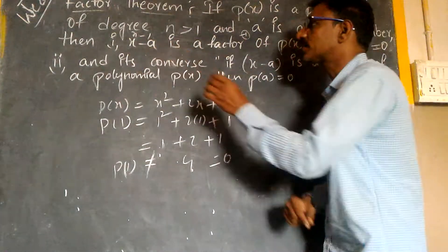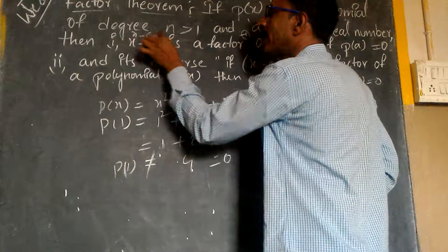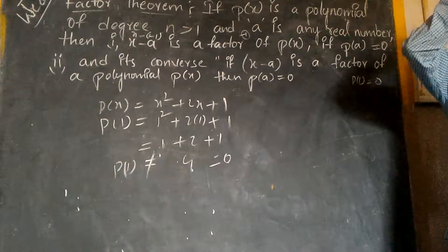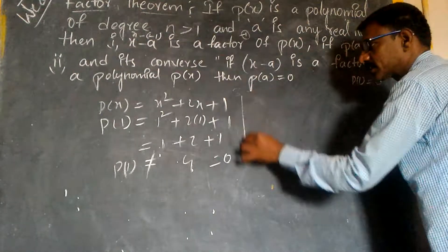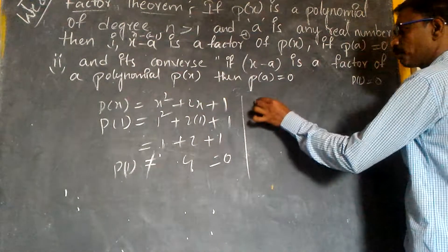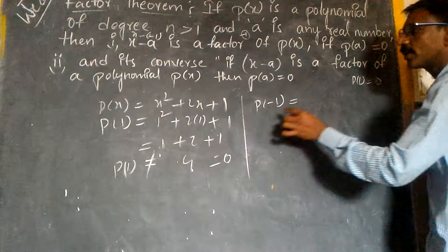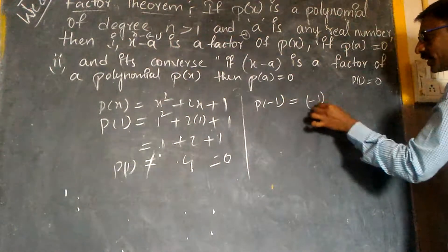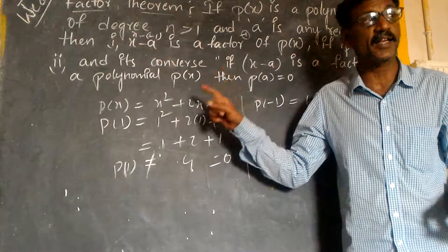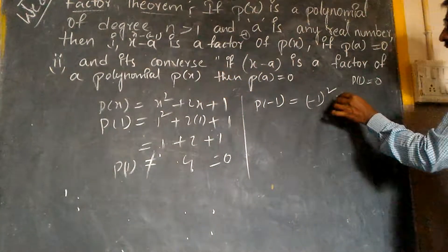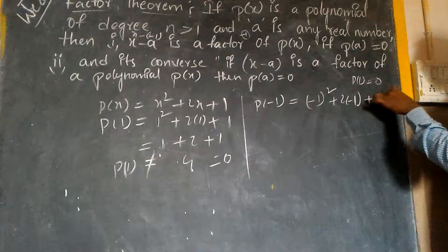Then x minus a becomes x minus (-1), which is x plus 1. Let us check it out with the help of p of minus 1. P of minus 1 is equal to: minus 1 whole square plus 2 into minus 1, plus 1. In place of x I am taking minus 1.